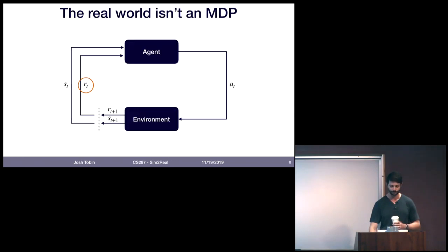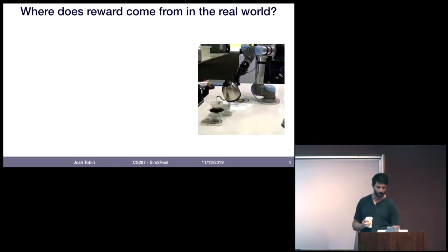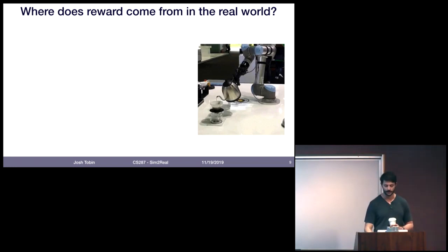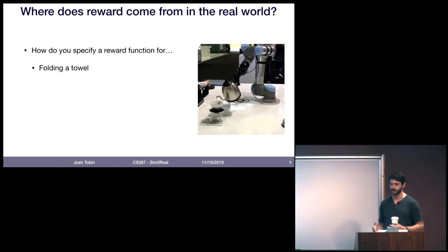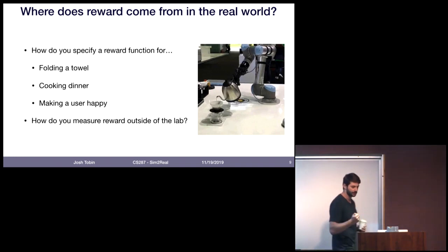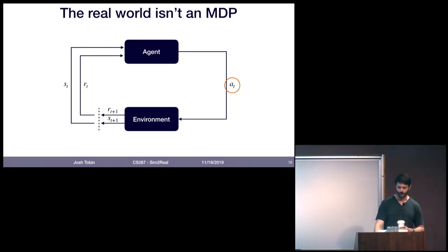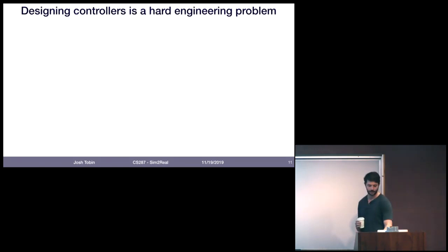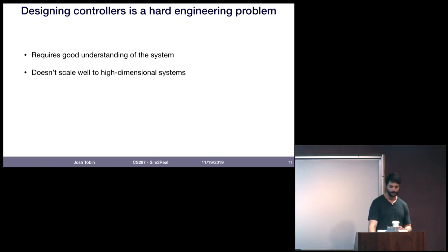The next assumption in an MDP is that we get a reward. But where does reward come from in the real world? If you're trying to have a robot pour a cup of coffee, how do you set up a system that gives you reward when it does that successfully? What does a reward function look like for folding a towel, cooking dinner, or making a user happy? And even if you can define a reward function, measuring it often relies on sensors to tell us where the robot is in space. How do you measure reward outside the lab?